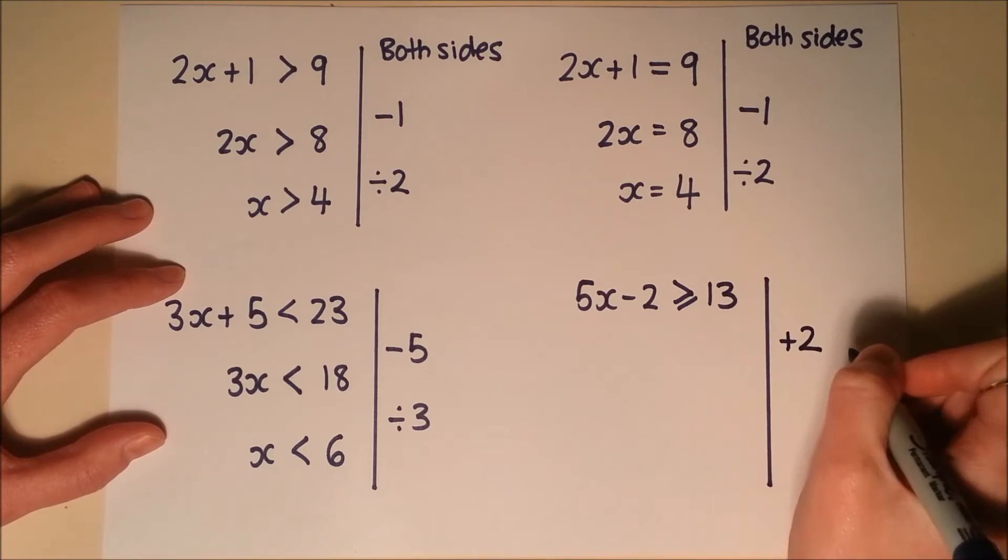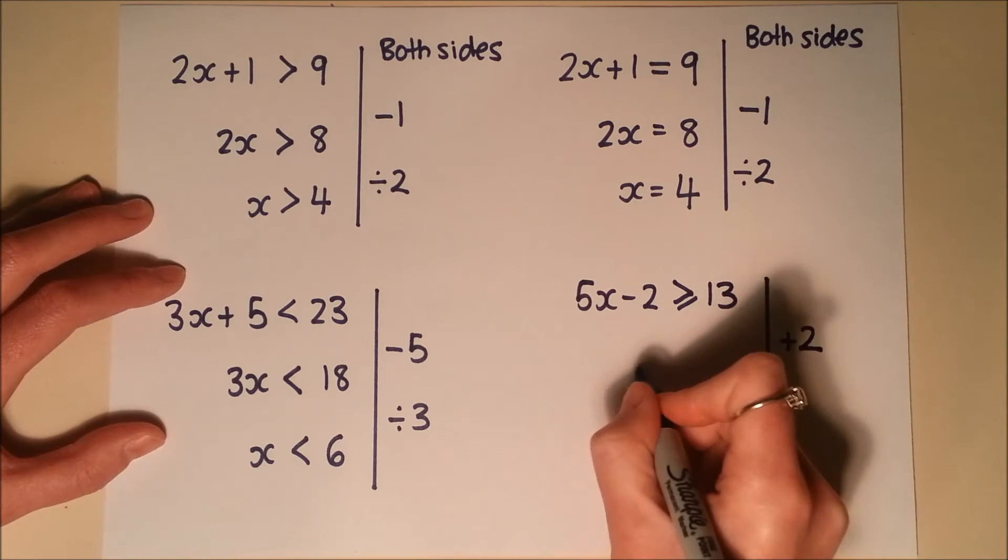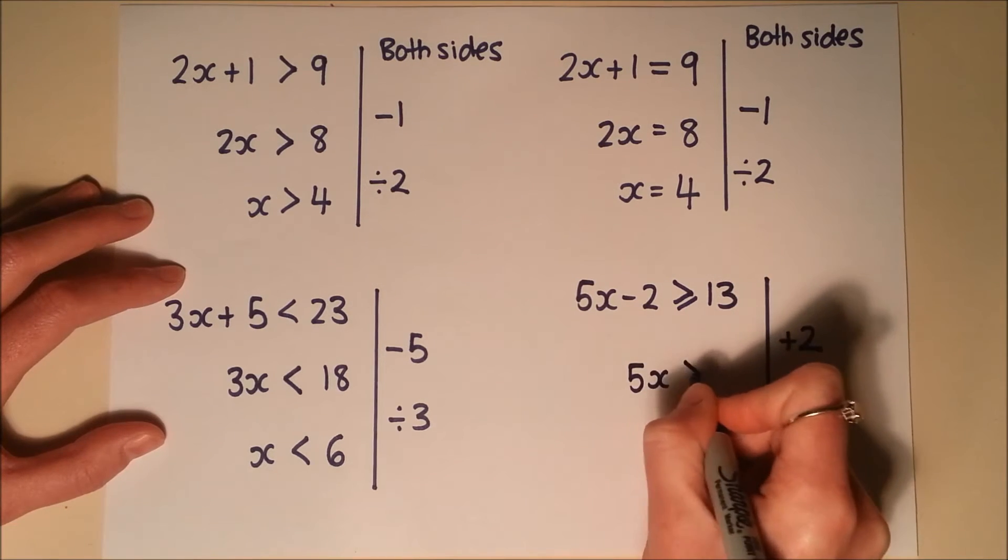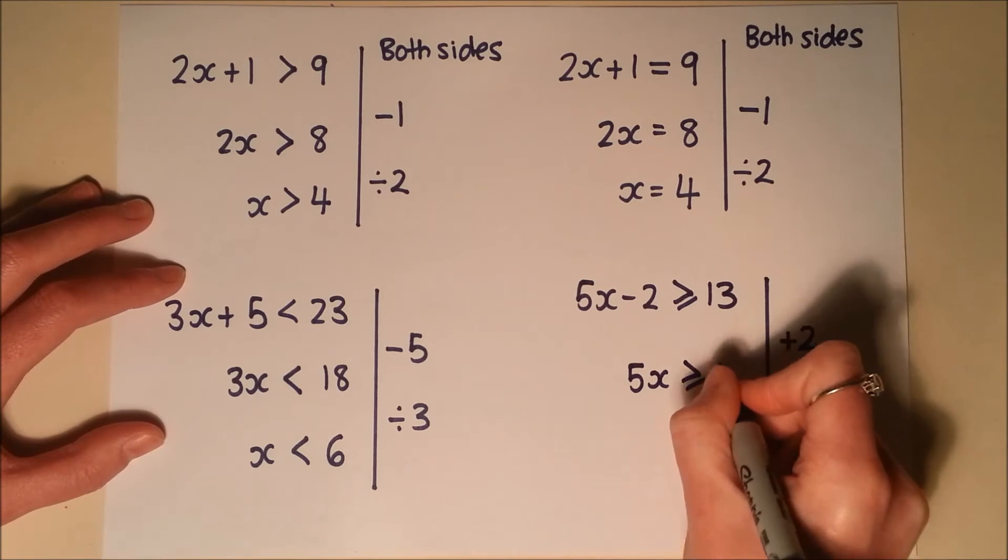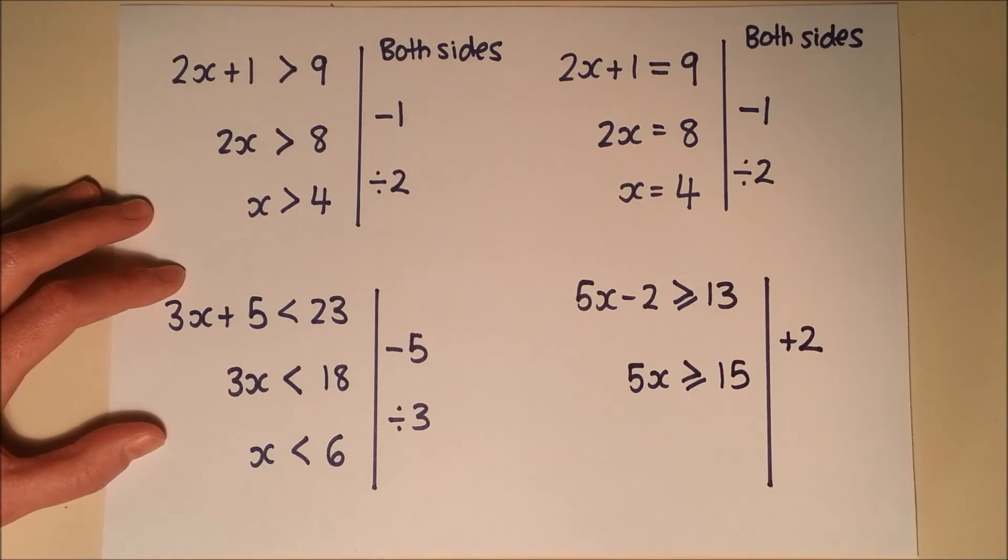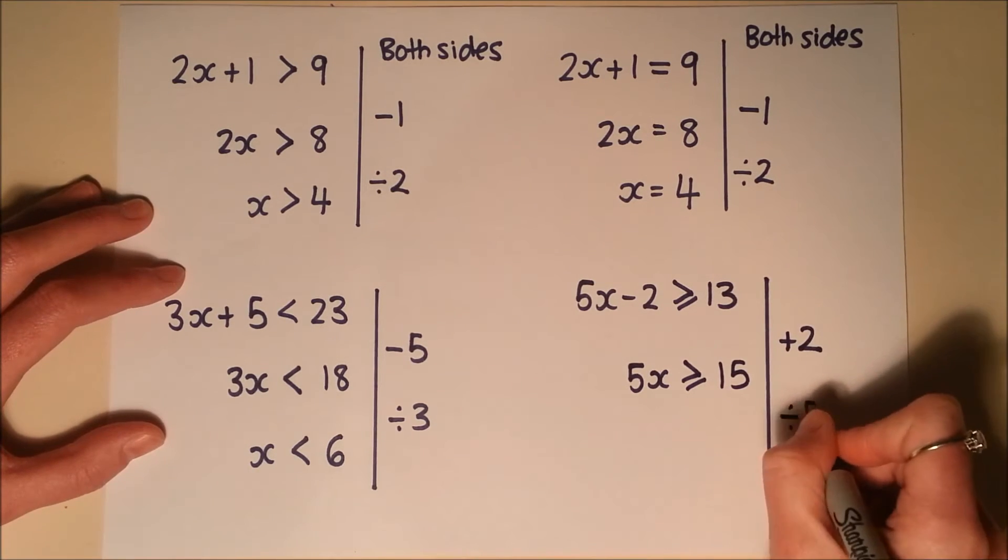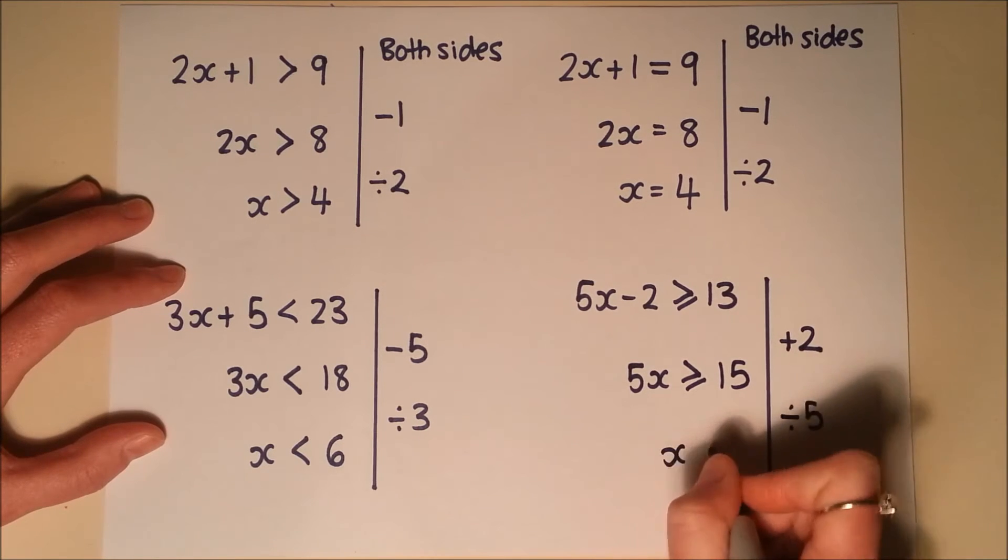So it's going to give me 5x is greater than or equal to 13 plus 2, 15. And then divide by 5. So x is greater than or equal to 3.